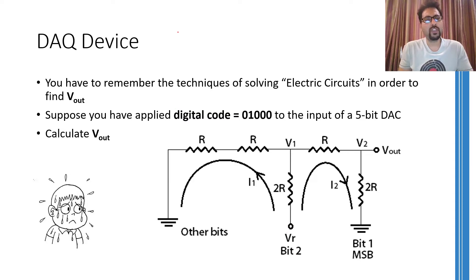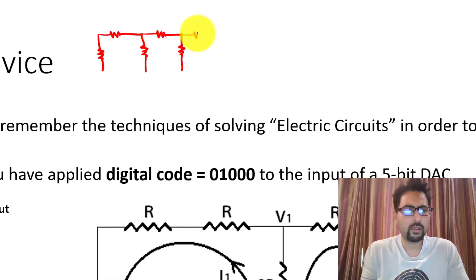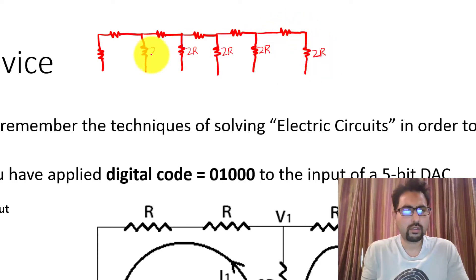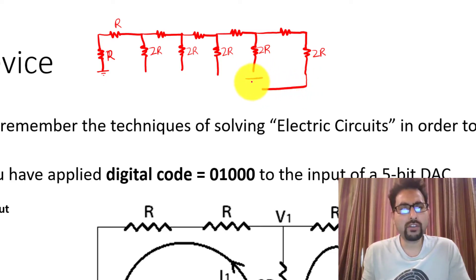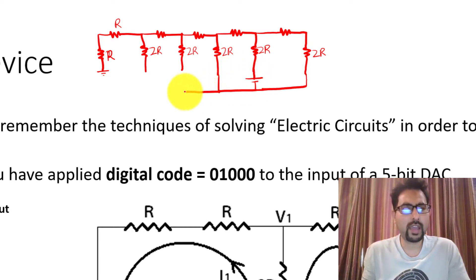You might be wondering how we came up with this circuit. If I draw the R2R ladder network and apply the code shown — where the most significant bit is 0 and only the power source at the second most significant bit location is turned on — the equivalent circuit would be something like this. All other sources are turned to 0.